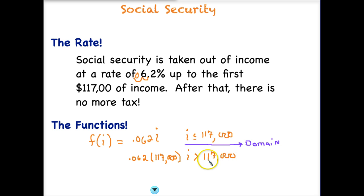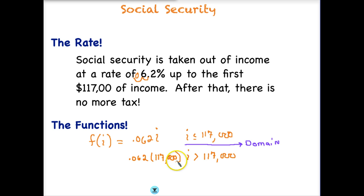So those are our two pieces. We use the first equation if we make $117,000 or less. If we make more than $117,000, we use the second equation, because we know we're going to get the full tax — 6.2% on $117,000. Now let's use these equations to actually solve a tax problem.